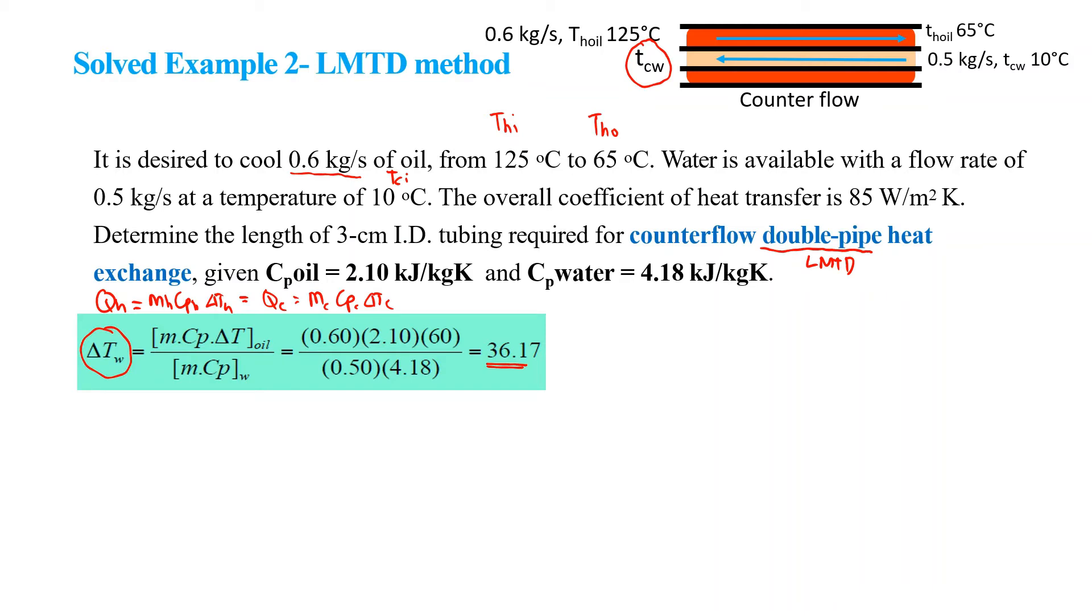So from when we know the delta, then we can find out the temperature of water out equal to 46.17 degrees Celsius. So now we then know what is delta T O in the LMTD. Delta T O is the one in the hot side. So it is 125 minus 46.17 degrees Celsius.